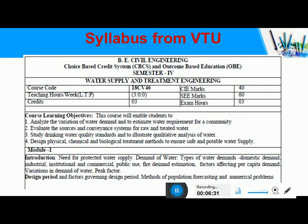Coming to the syllabus, it is divided into 5 modules. Module 1 consists of the need for protected water supply, the different types of demand — domestic demand, industrial demand, commercial demand, public use, fire demand — and estimation. It also covers the factors affecting per capita demand, variations of water demand, peak factor, design period, factors affecting design period, methods of population forecasting, and some numerical problems.